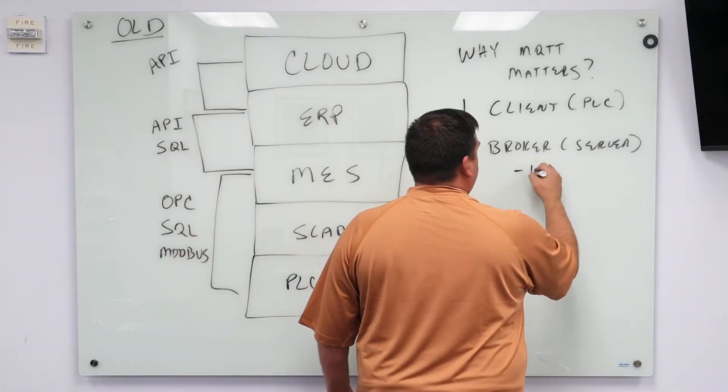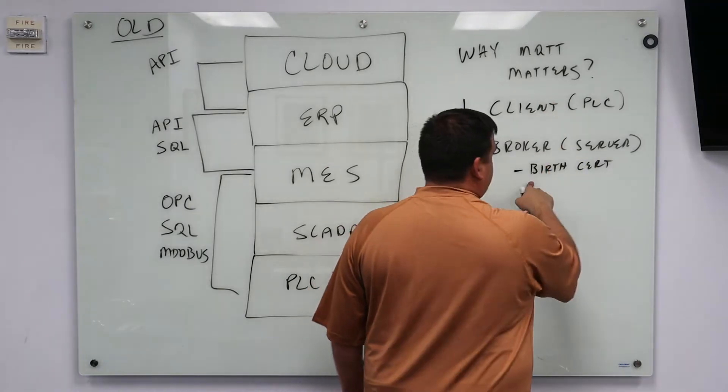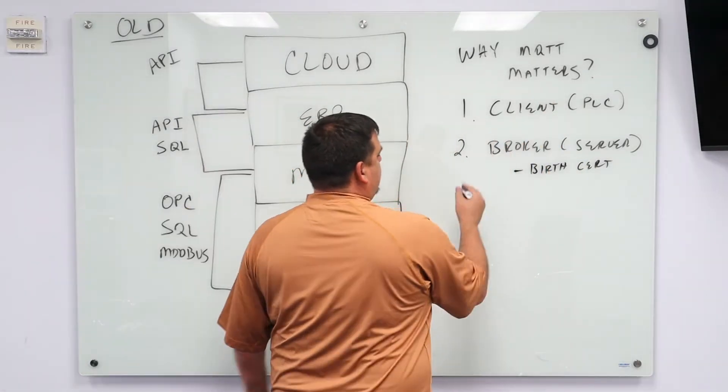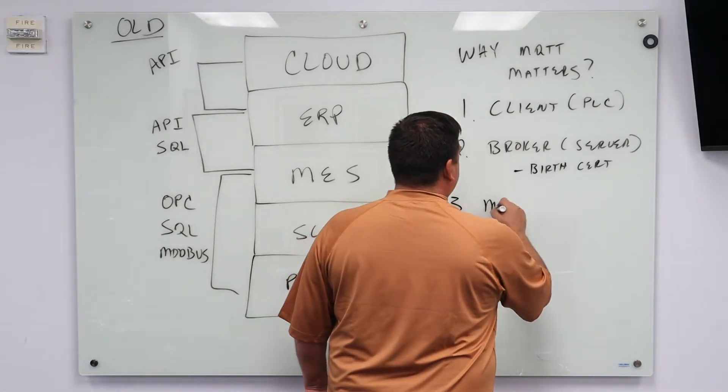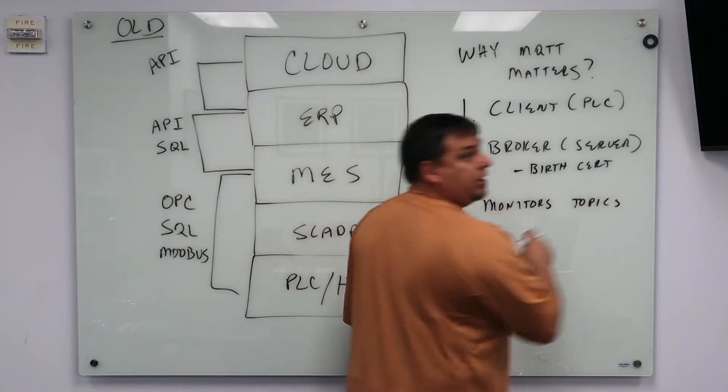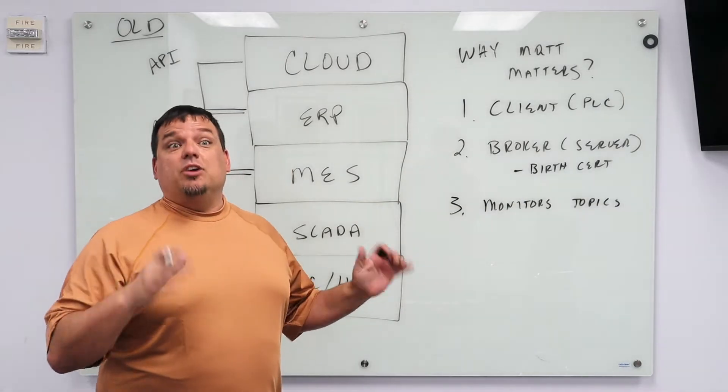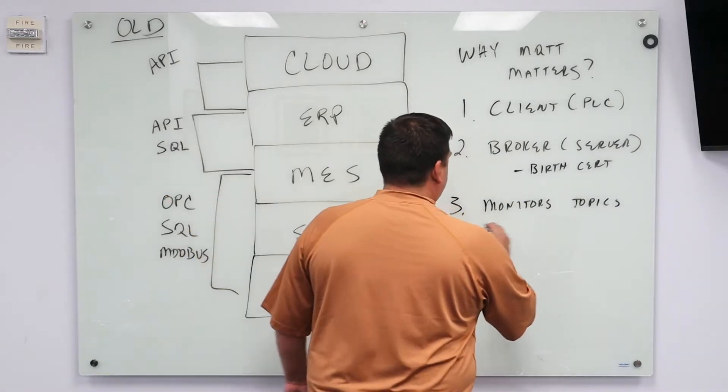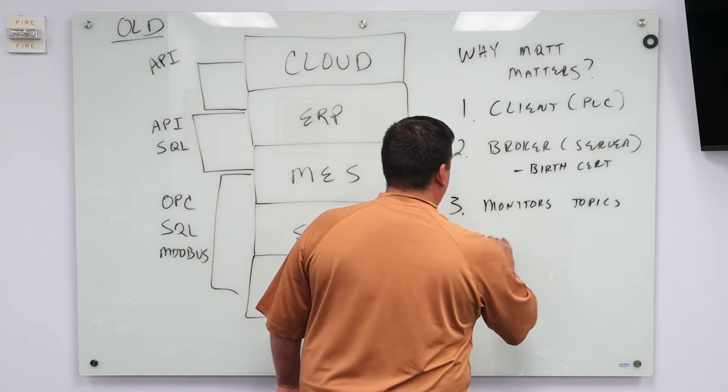The device sends a birth certificate. The client sends a birth certificate to the broker and the broker stores that information. And then the client monitors its topics, and we call in MQTT lingo is topic, but in industrial lingo it's tags.